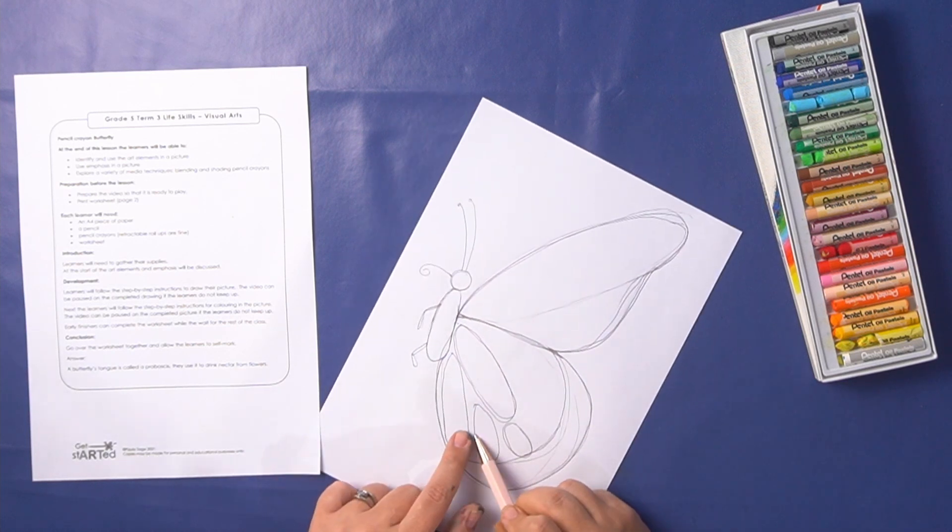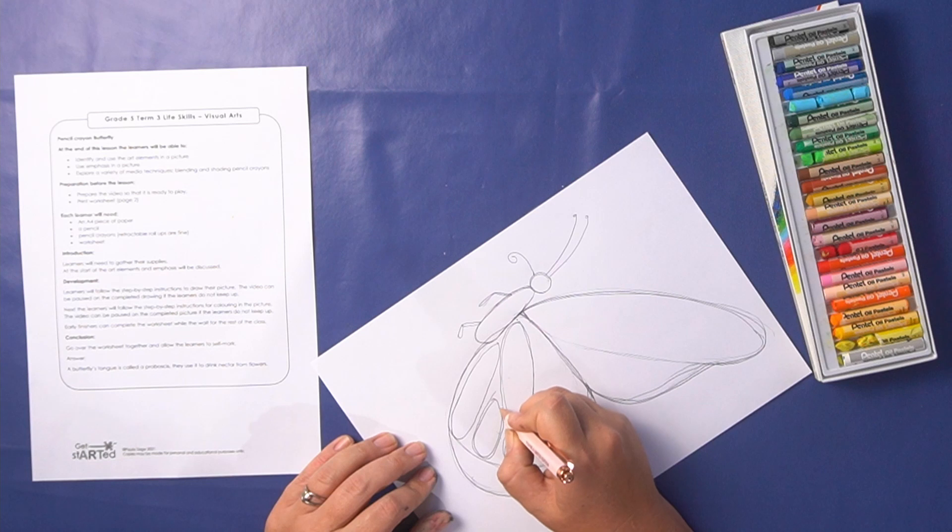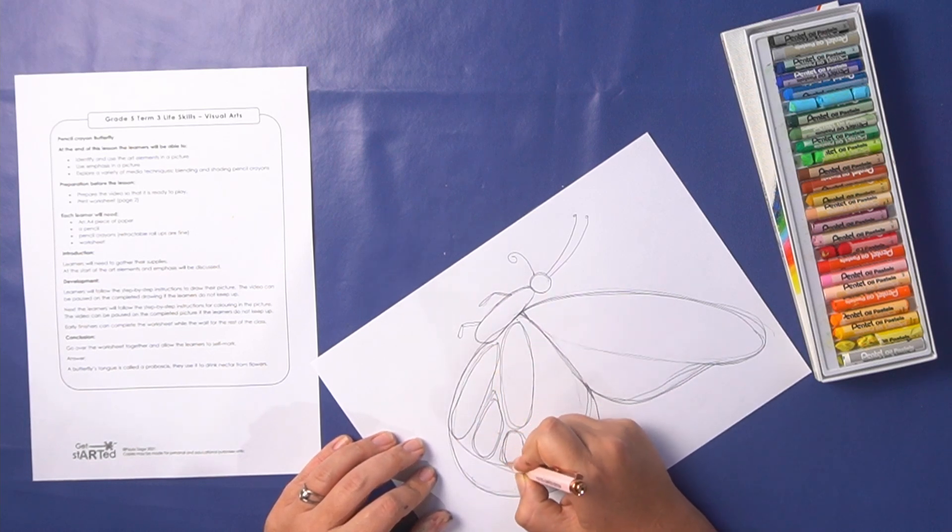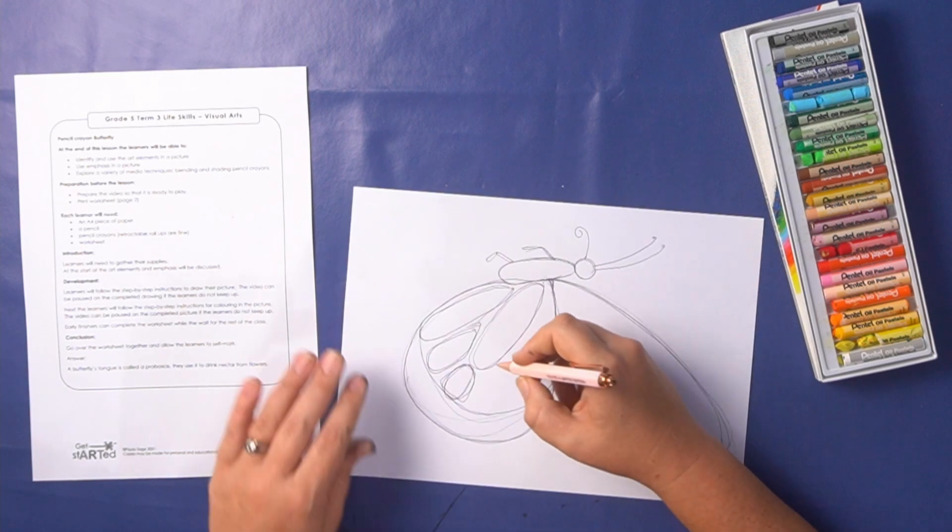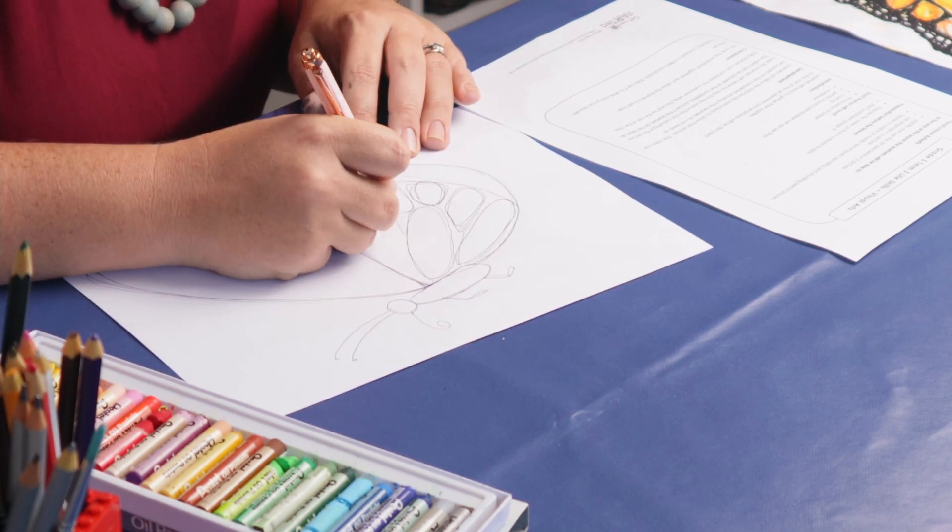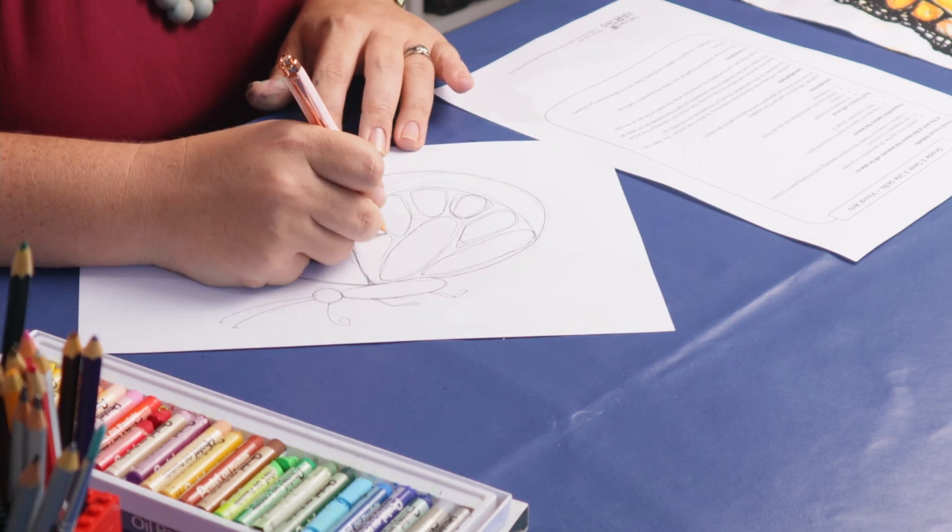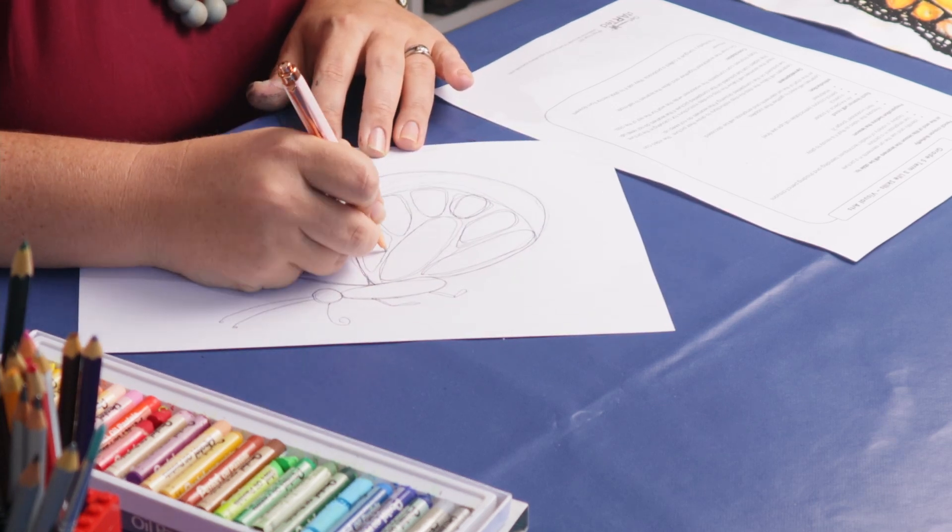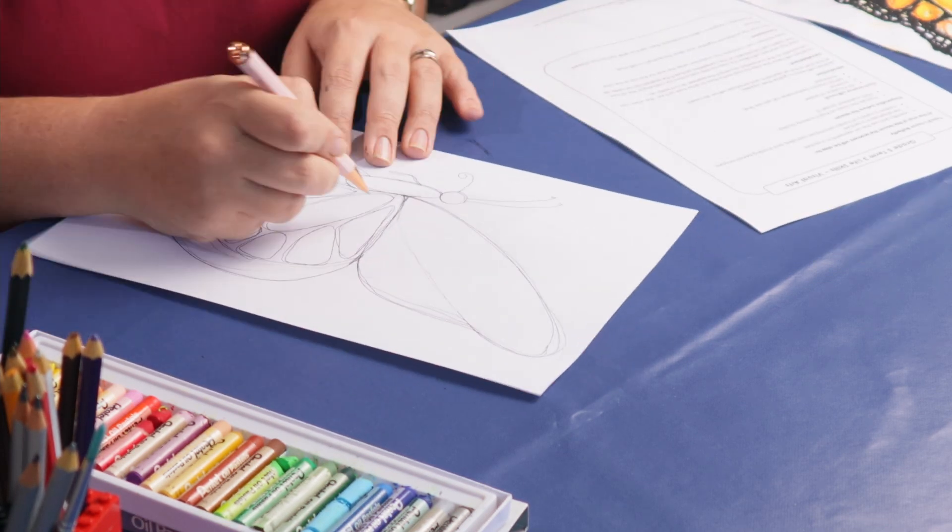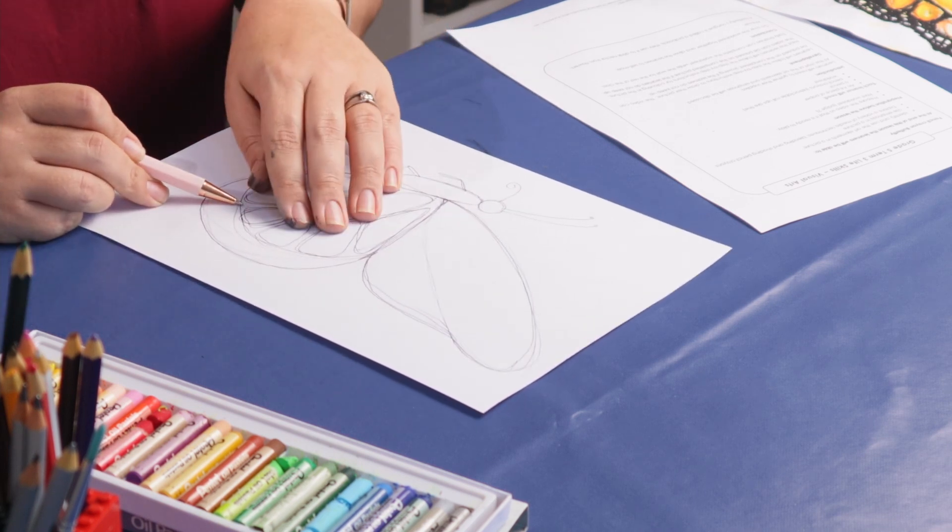These ovals should be quite close together but there should be space in between them for the black outline. So each of these little ovals has a black outline around it. You can see my last one is more of a triangle shape. So I'm saying oval but use the shape that you've got left or the space that you've got left. Okay so we've drawn out our plan for our bottom wing.